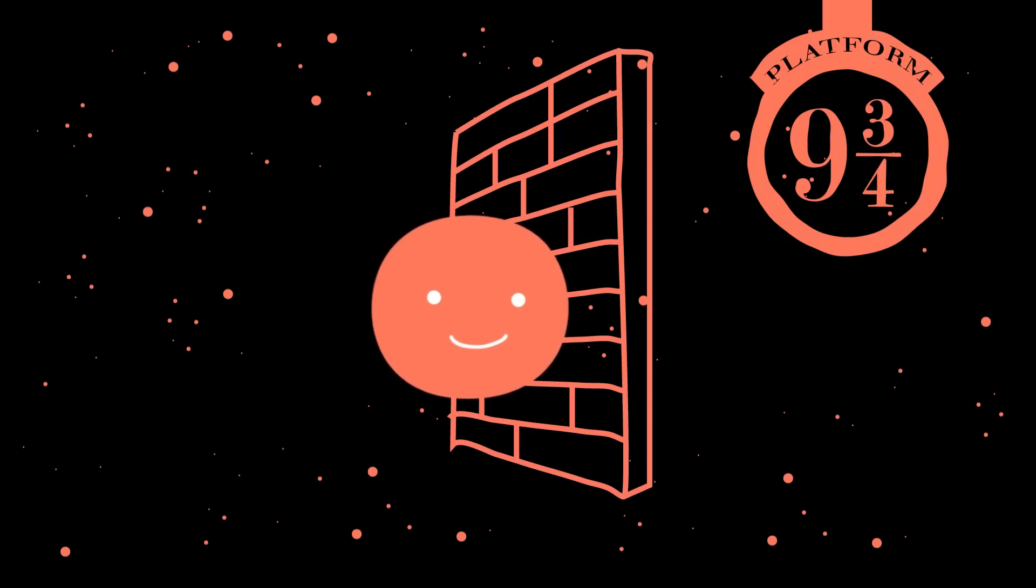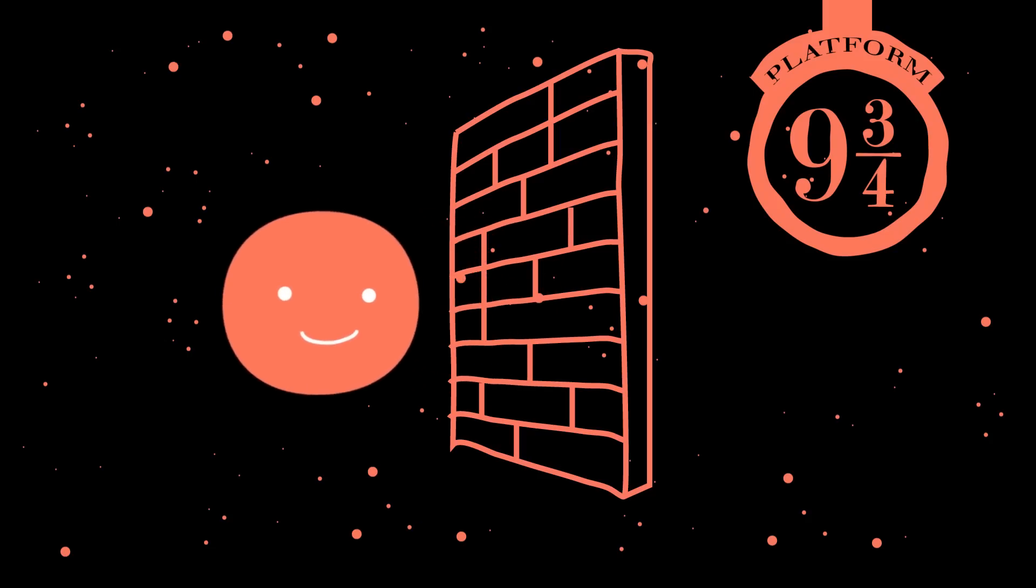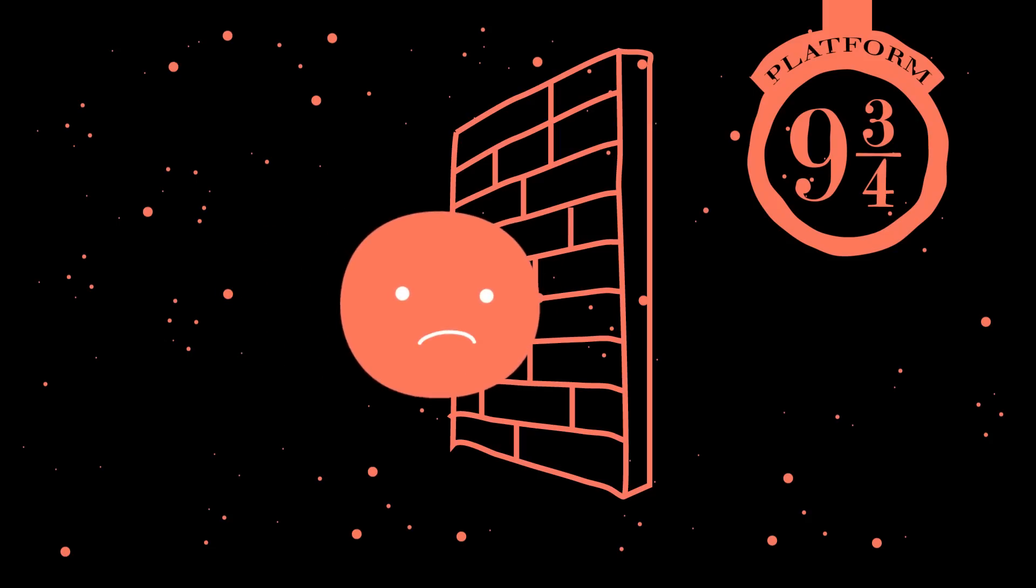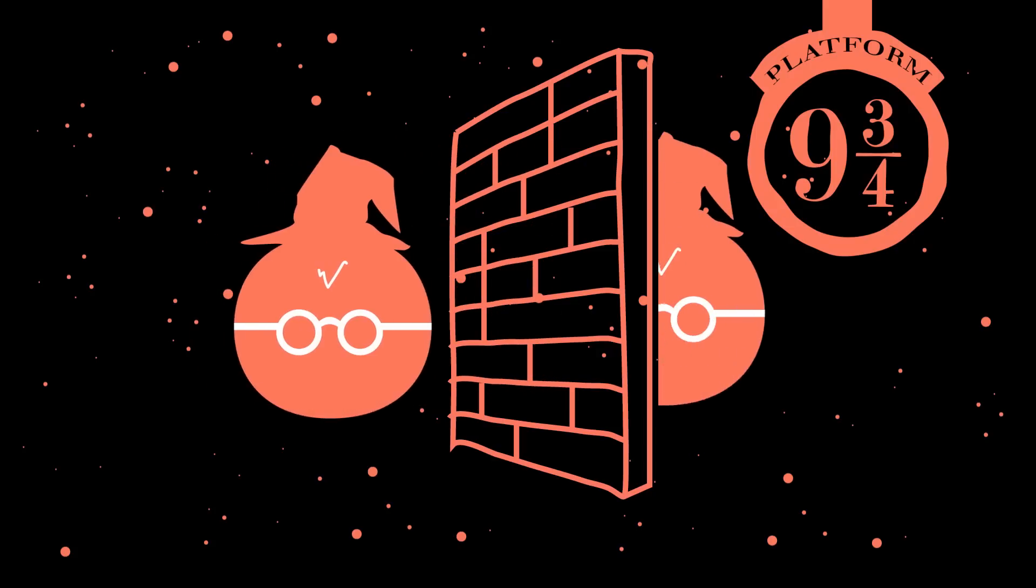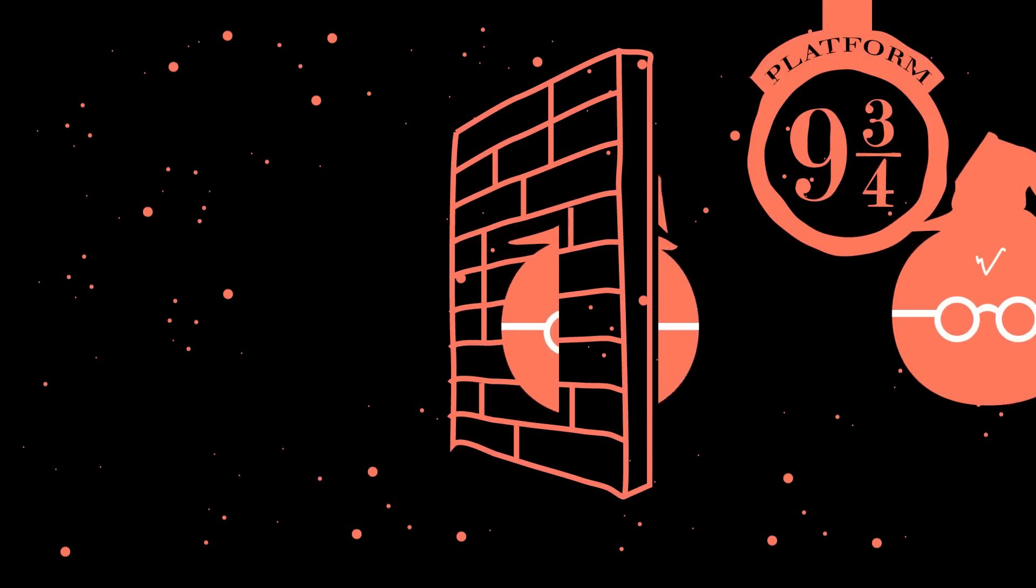If muggles try to walk through the barrier at King's Cross Station to get to platform 9 and 3/4, they can't, because the wall is solid to them, the same way a wall is solid to an electron.